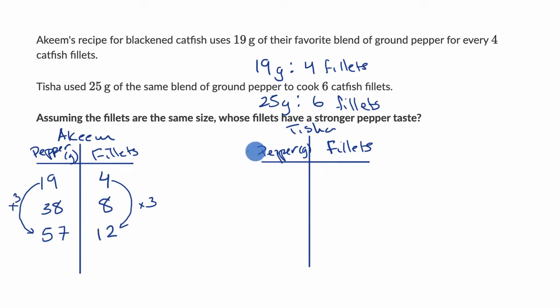So when Tisha makes six fillets, then she's going to use 25 grams. What if we double it to 12 fillets? And this is interesting because we have 12 fillets here. Well, then we would double the pepper to 50 grams.